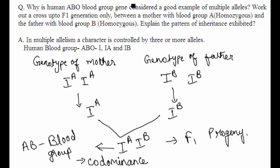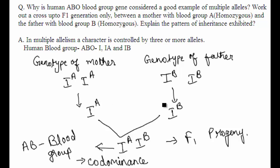The question involves a mother with blood group A homozygous and a father with blood group B homozygous. Since they are homozygous, the genotype of the mother would be IA IA and the genotype of the father would be IB IB. These are the gametes produced from the mother and father.